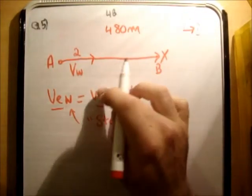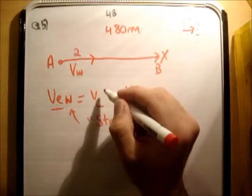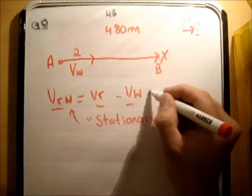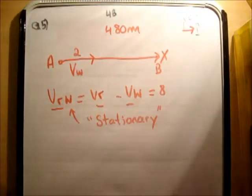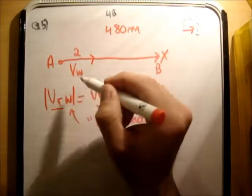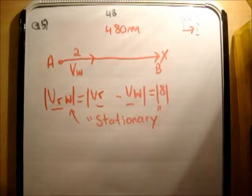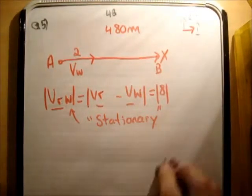And if this is water, well then this of course will be the rower. I'm going to call it VR. So VRW is 8 units. Now the magnitude of it is 8 units, because of course we have not given it a direction. So let's give this a direction.